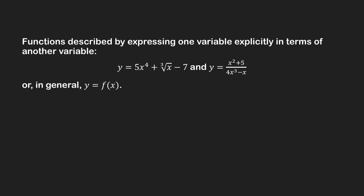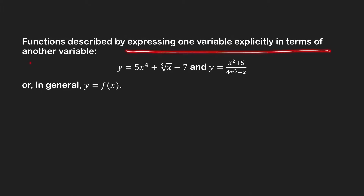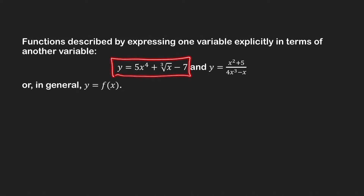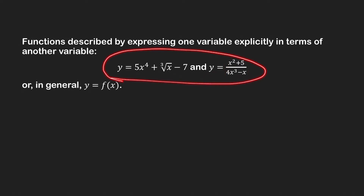A function can be defined explicitly or implicitly by an equation. If a function is defined explicitly by an equation, then in general it is written in the form y equal to function of x, which means that the variable y is expressed explicitly in terms of the variable x. We say that these equations define the functions explicitly.